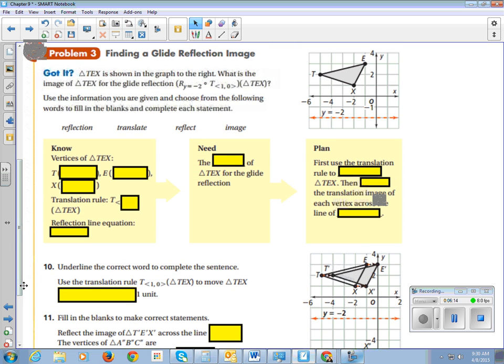All right. So let's look at these two problems. In triangle TEX, what is the image for the glide reflection reflect across Y equals negative two and translated one comma zero of triangle TEX? Use the information you're given and choose from the following words to fill in the blanks to complete each sentence.